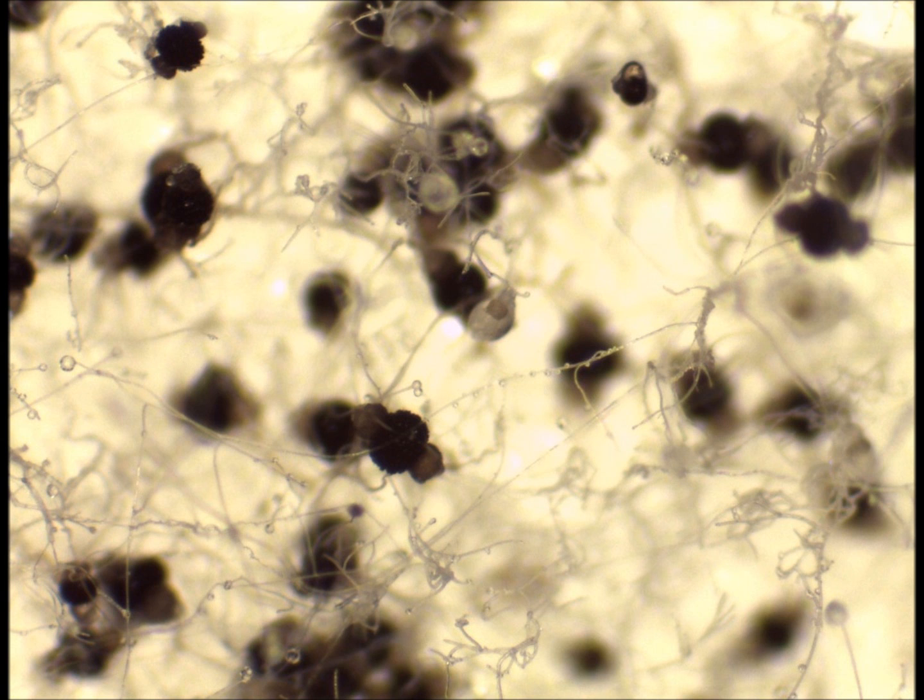So use the stereo microscope to have a good look at the plate, probably starting at low magnification, and make sure that you can identify the two different types. Remember that you can use the focus to change the focal plane and to move from looking at the spores close to the surface of the agar to those that are further from the surface.